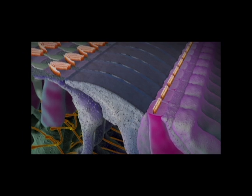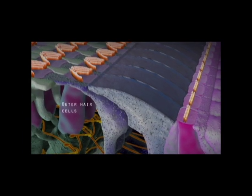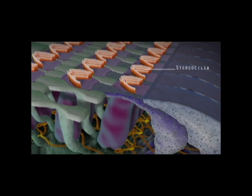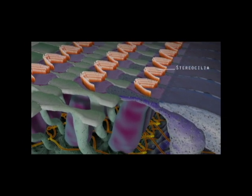Located further from the modiolus, the outer hair cells outnumber the inner hair cells four to one. Their stereocilia are arranged in a V or W formation.